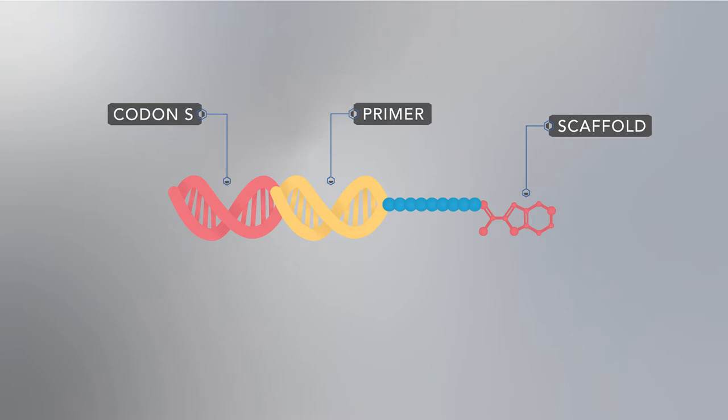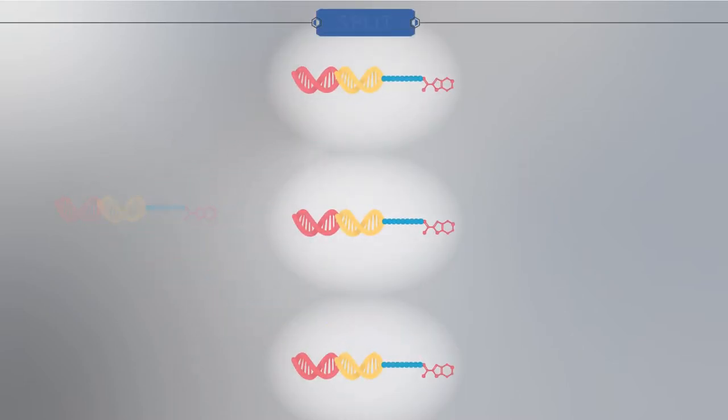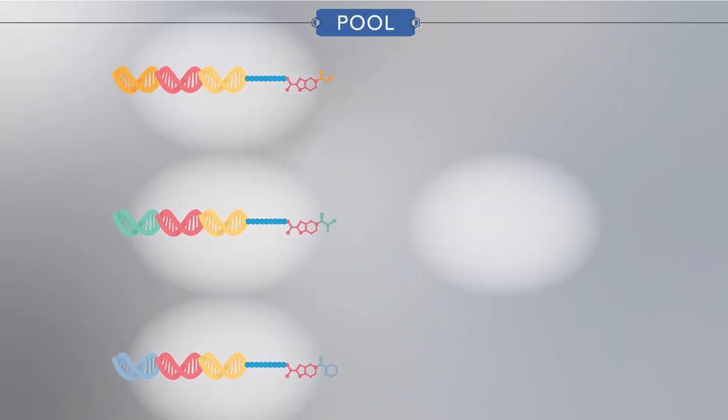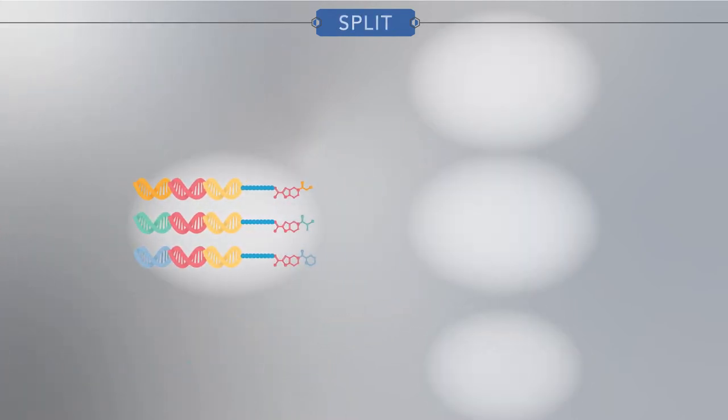Instead of building all compounds individually, HitGen uses a highly efficient split and pool process. At each synthesis step, compound intermediaries can be split, so different building blocks can be added.